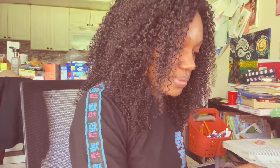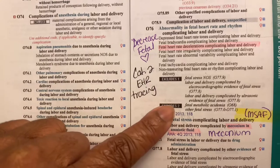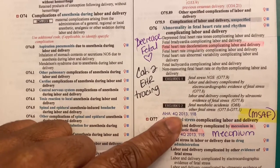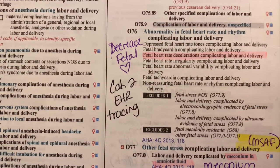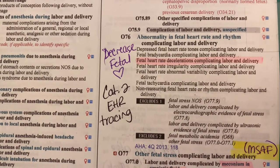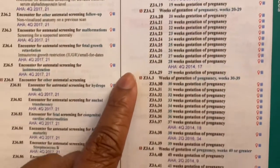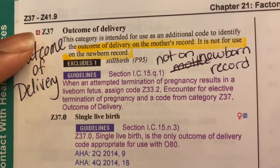My next code is O76, the abnormality in fetal heart rate. It also states excludes 1 for certain codes, but we are not using those, so I don't have to worry about it. There is also an excludes 2 note, meaning if the baby had fetal metabolic acidemia O68, or other fetal stress O77.0 through O77.1, I could bill those codes together with O76 because it's an excludes 2 — not an excludes 1. Next I need to look up the weeks of gestation and the single live birth codes.